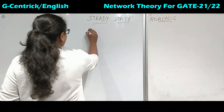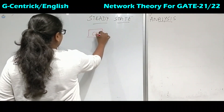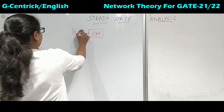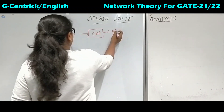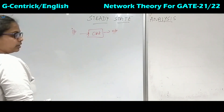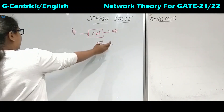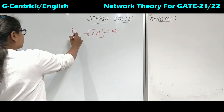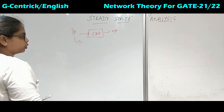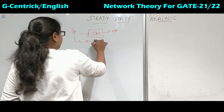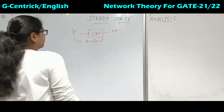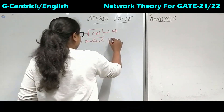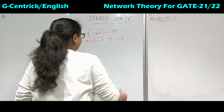So in DC analysis, what did we do? A circuit was given, and we had either input or output. We had to find the output for the circuit. How was our input? It was nothing but constant — we did not see any type of time-varying quantities for the input. It was always time invariant.